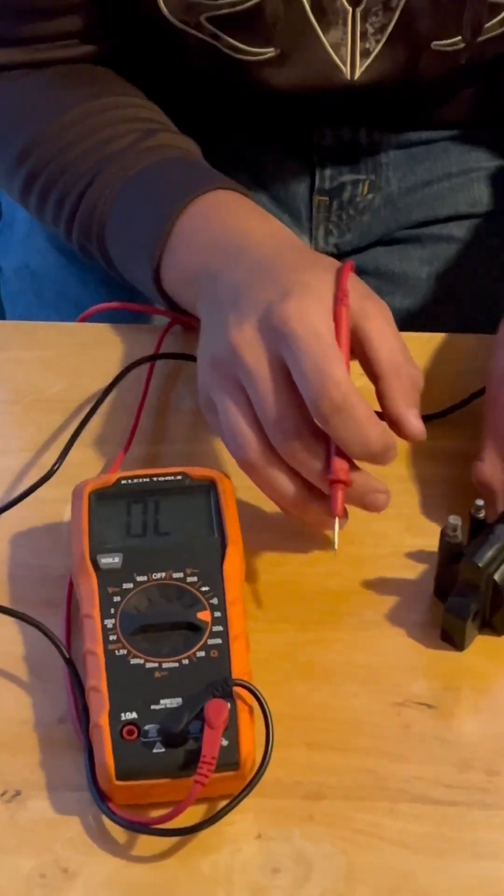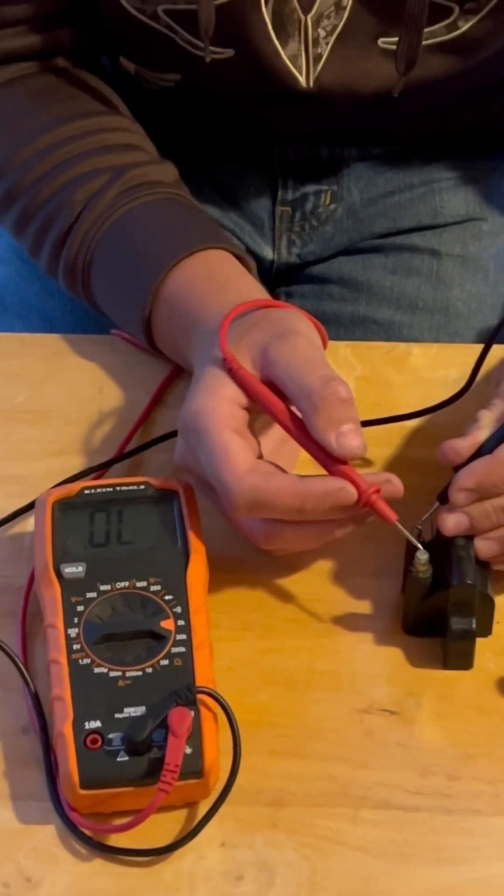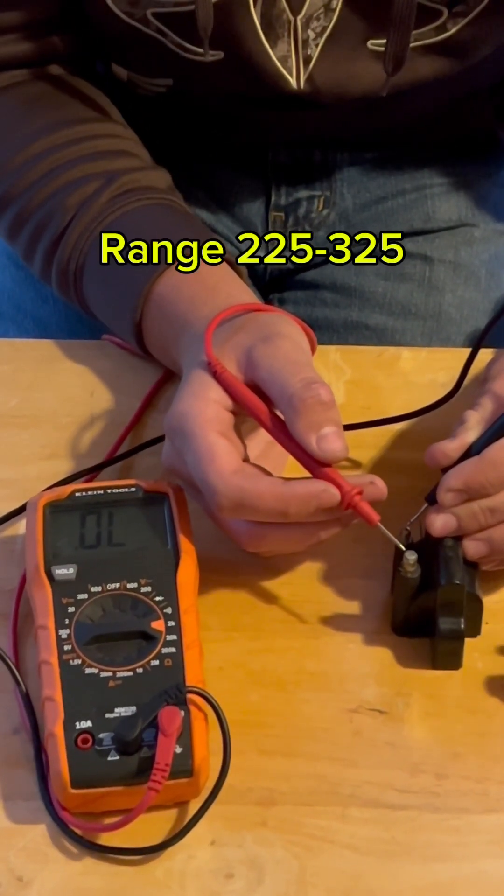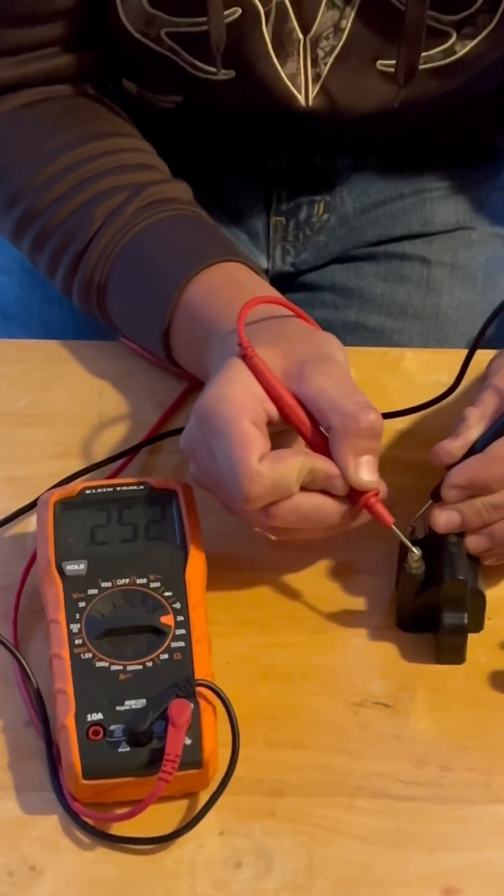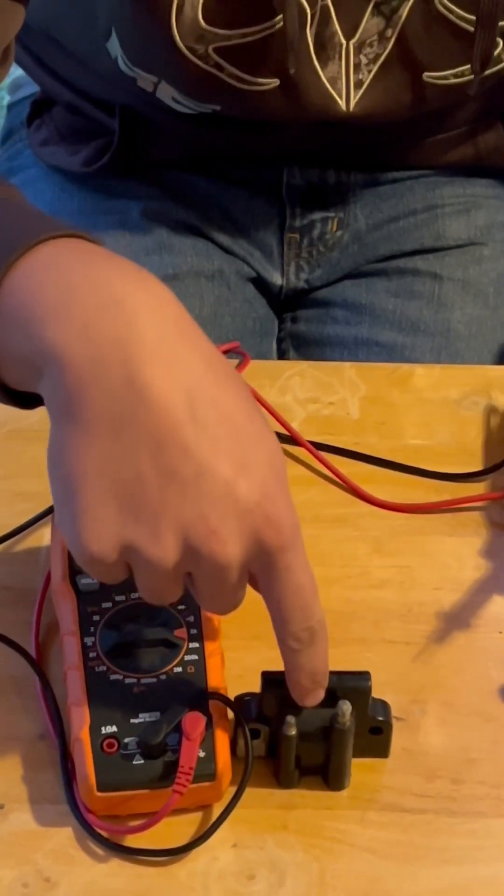Now for the second test, put the negative lead onto the primary, the hot onto the spark plug wire. This should range anywhere from 275 plus or minus 50. This reads around 252. That means this coil is good. It passed both tests.